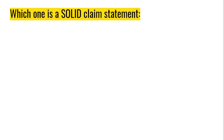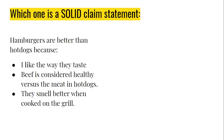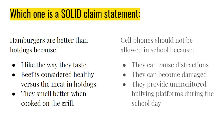Based on what we've talked about regarding claim statements, which of these two examples is a better claim statement? Option one: 'Hamburgers are better than hot dogs because I like the way they taste, beef is considered healthy versus meat in hot dogs, and hamburgers smell better when cooked on the grill.' Yes, there are three reasons and a side is taken — hamburgers are better. Now look at option two: 'Cell phones should not be allowed in school because they can cause distractions, they can become damaged, and they provide unmonitored bullying platforms during the school day.'